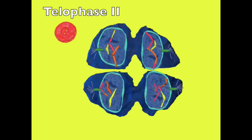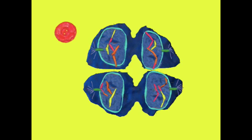During telophase II, nuclei reform at the opposite poles. The spindle fibers again break down and the cytoplasm divides during cytokinesis. Four daughter cells are now produced with half the number of chromosomes of the original parent cell, making them haploid cells.